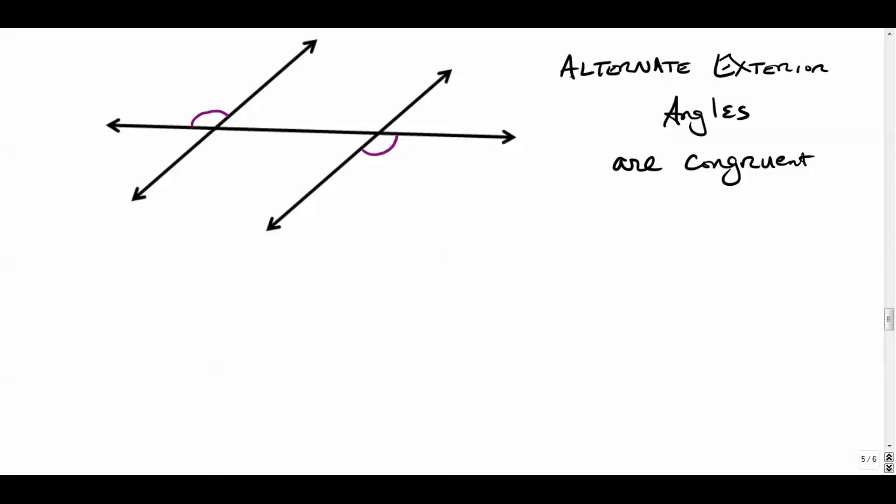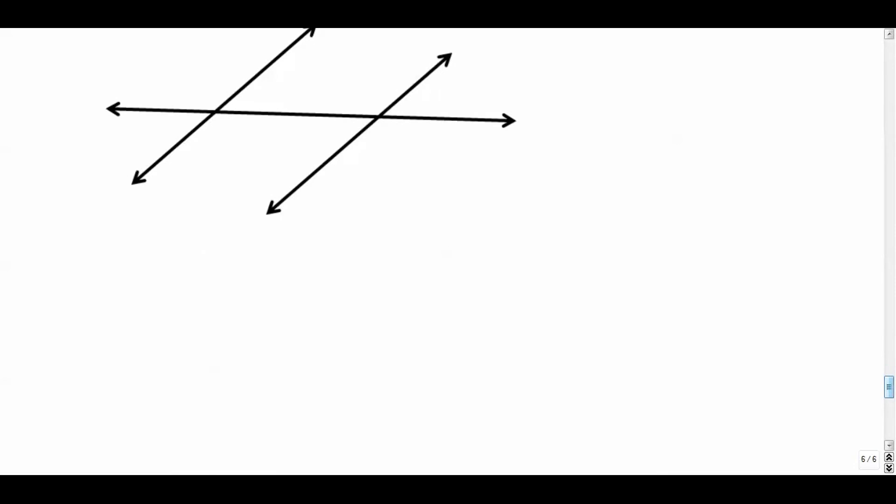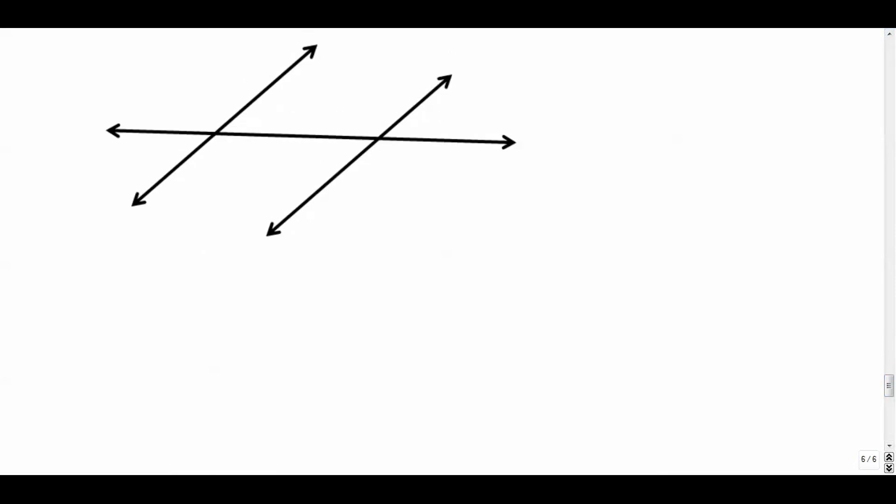Now there are some pretty fancy proofs that are behind all this stuff, but I'm not really going to get into that right now. I'm just going to really present to you the basic definitions and go from there. What happens when we have angles that are both on the inside, but they're on the same side of the transversal? So hopefully you would agree that these are interior angles. They're both on the inside of our parallel lines. But this time they're on the same side of our transversal. They're both above the transversal. So we call these same side interior angles. That's pretty simple.